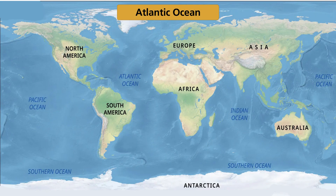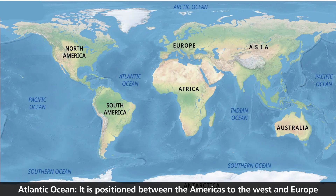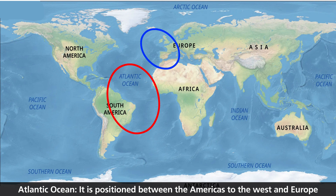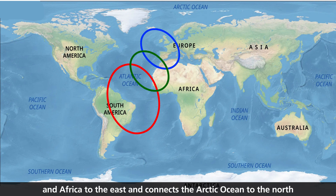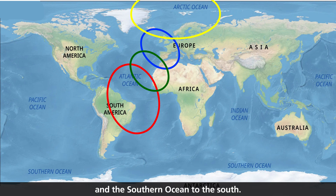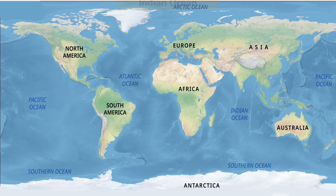Atlantic Ocean: It is positioned between the Americas to the west and Europe and Africa to the east, and connects the Arctic Ocean to the north and the Southern Ocean to the south.